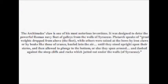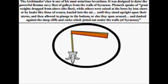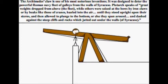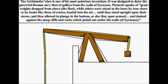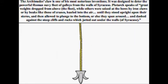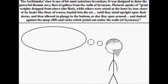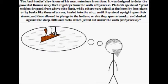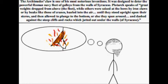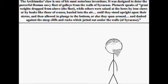Archimedes' claw is one of his most notorious inventions. It was designed to deter the powerful Roman navy fleet of galleys from the walls of Syracuse. Plutarch speaks of great weights dropped from above the fleet, while others were seized at the bows by iron claws, or by beaks like those of cranes, hauled into the air until they stood upright upon their sterns, and then allowed to plunge to the bottom, or else they spun around and dashed against the steep cliffs and rocks which jutted out under the walls of Syracuse.